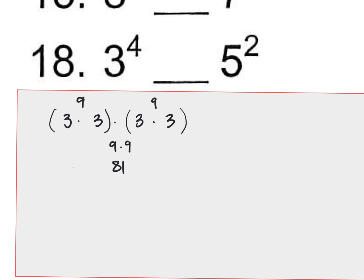Okay. Then I'm going to move over to 5 squared. 5 squared looks like 5 times 5. That's pretty simple for me to do. That's 25.